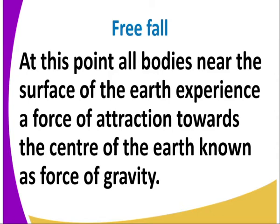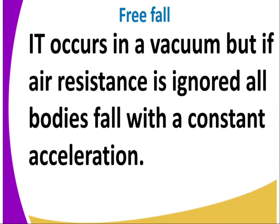All bodies near the surface of the earth experience a force of attraction towards the center of the earth — what we refer to as force of gravity. Free fall can only occur in a vacuum since there is no air resistance. But if air resistance is ignored, all bodies fall with a constant velocity. This means that a stone and a feather released at the same height will reach the ground at the same time, since they are falling at the same velocity.